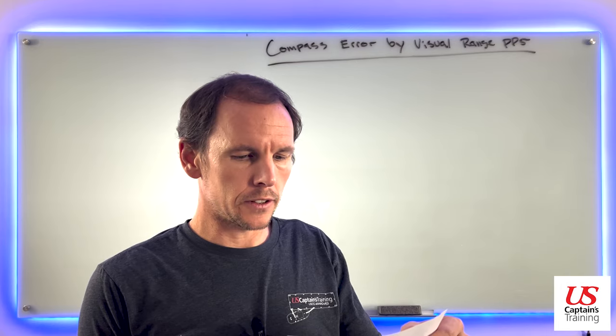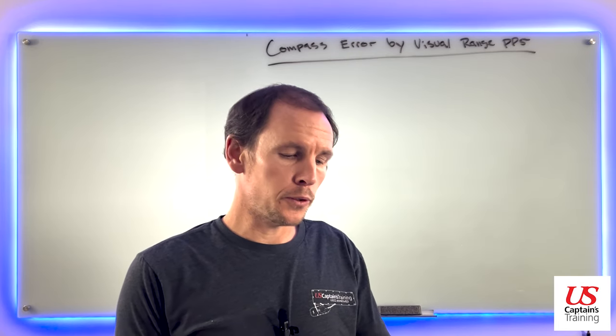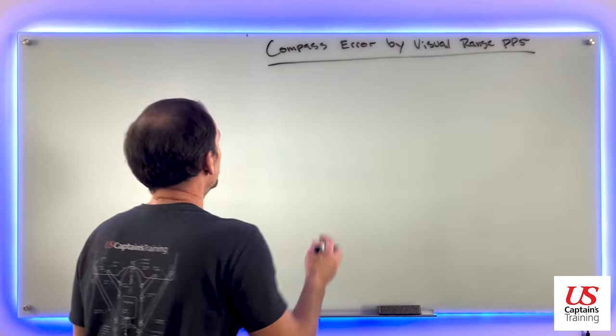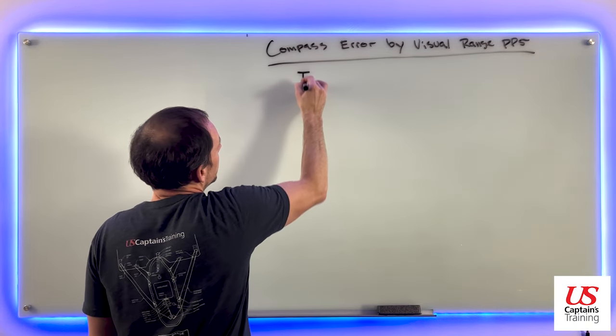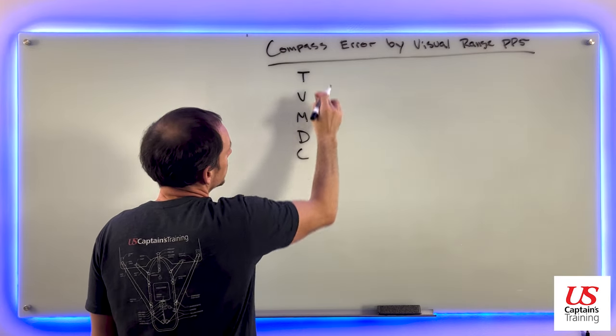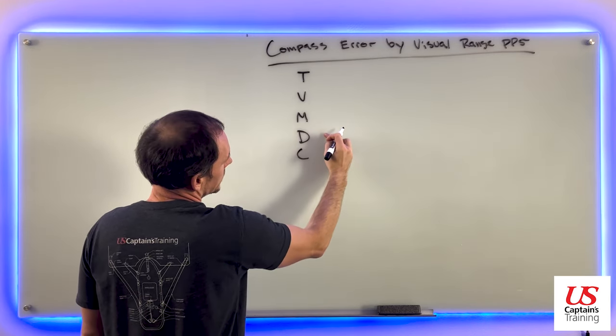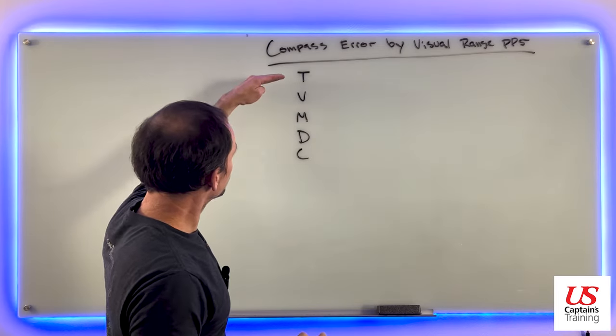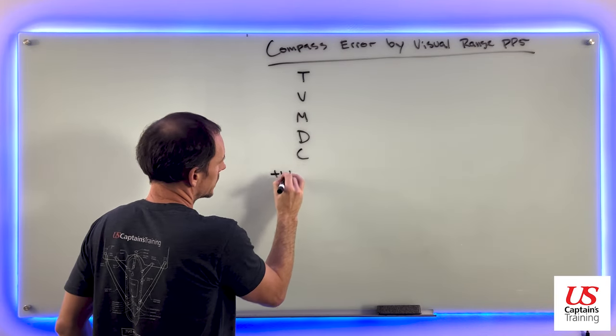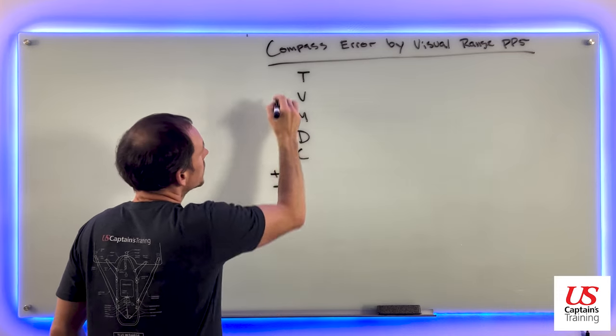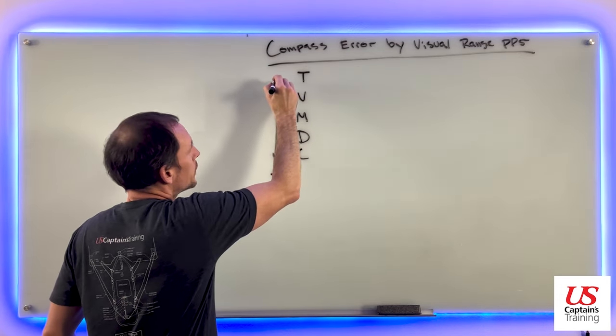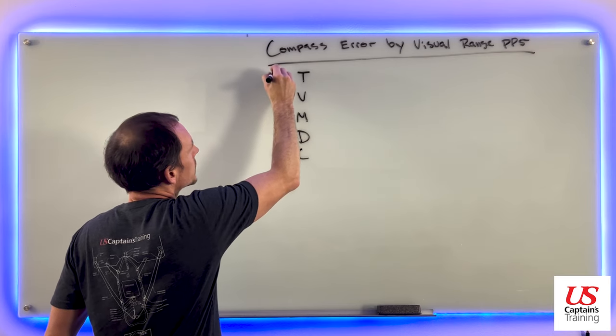All right, so we need to set this up so we can calculate deviation. We do that by saying TVMDC: True, Variation, Magnetic, Deviation, Compass. Or we can think true virgins make dull company - add whiskey, subtract eatics. That's when we're going down from true to compass. If we're going up, we do the opposite: minus west and add east.